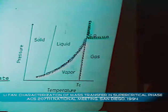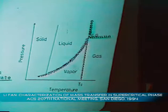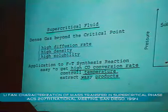As we know, different from the gas state, liquid state, or the solid state, the supercritical state owns the following special properties. For example, it owns high diffusion rates and high density.